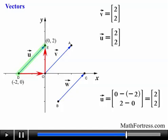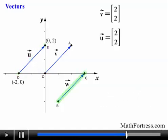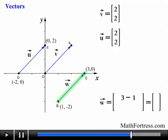Alright, let's use the same technique to find the components of vector w using the coordinates of the tail and head of the vector. So we see that point B has coordinates (1, -2). And point C has coordinates (3, 0). So now we find the difference between the x coordinates to find the x component. And find the difference between the y coordinates of the points to find the y component of the vector. So we have the vector w in component form is equal to [3 - 1, 0 - (-2)], which equals [2, 2]. So it turns out that all the vectors are the same.